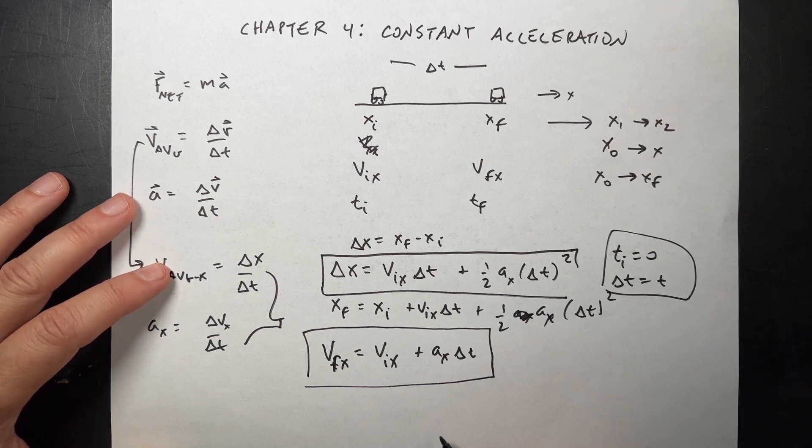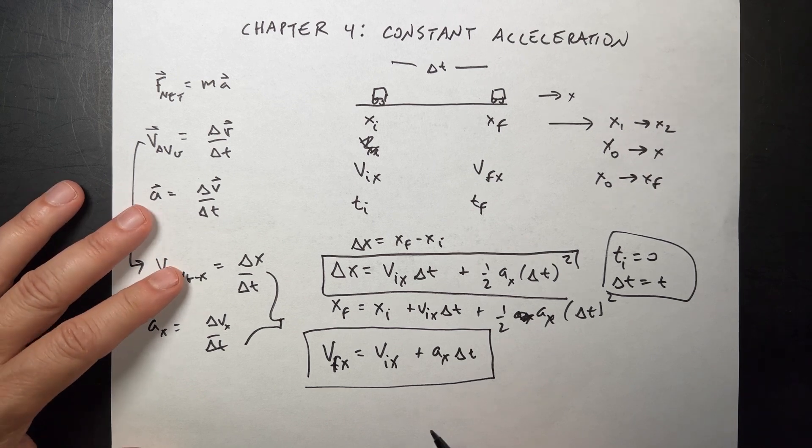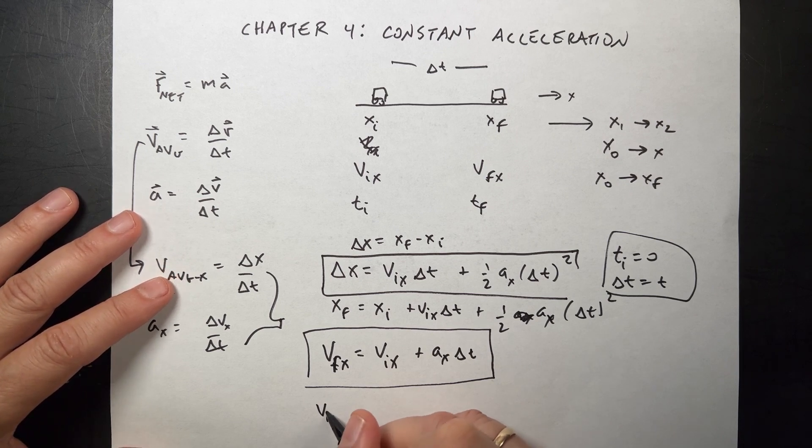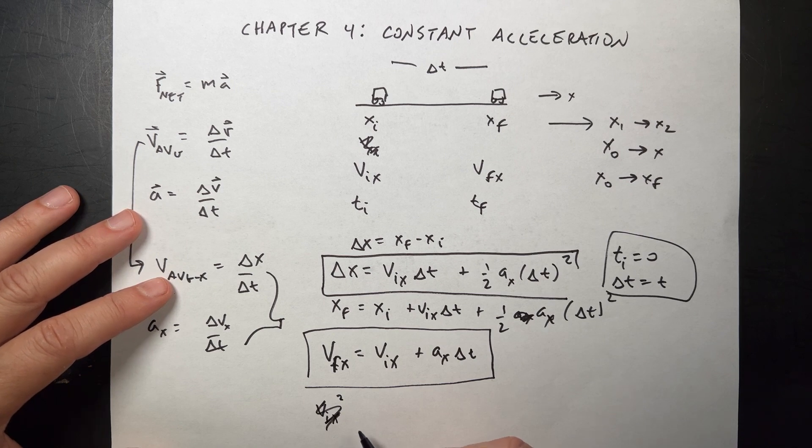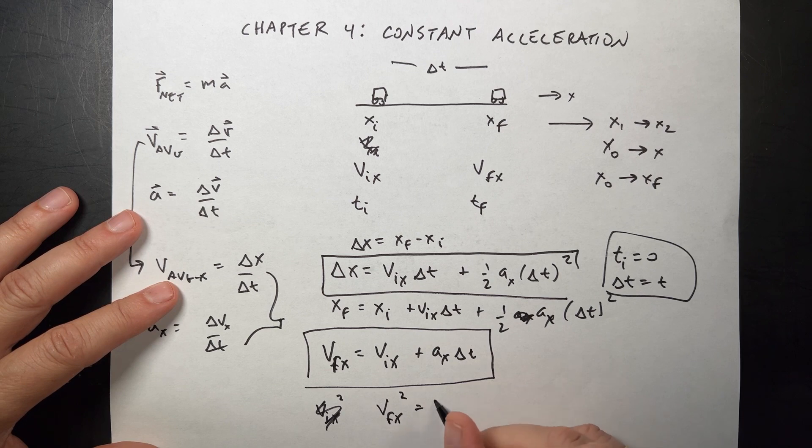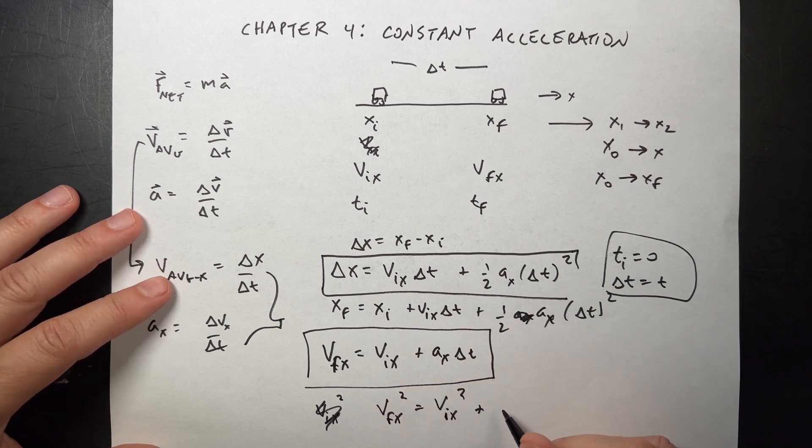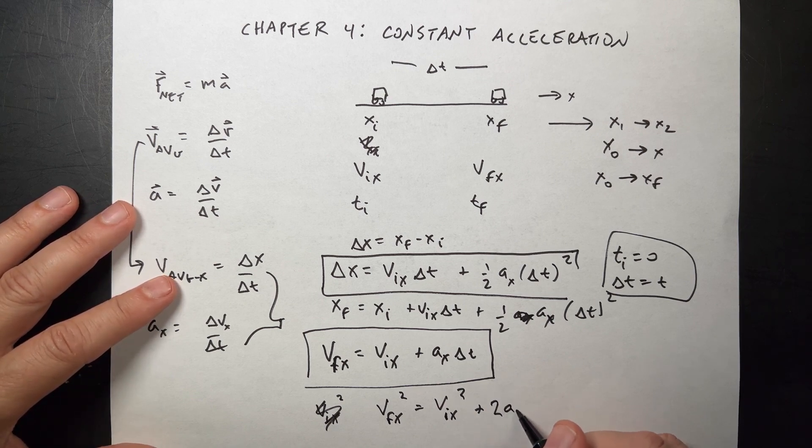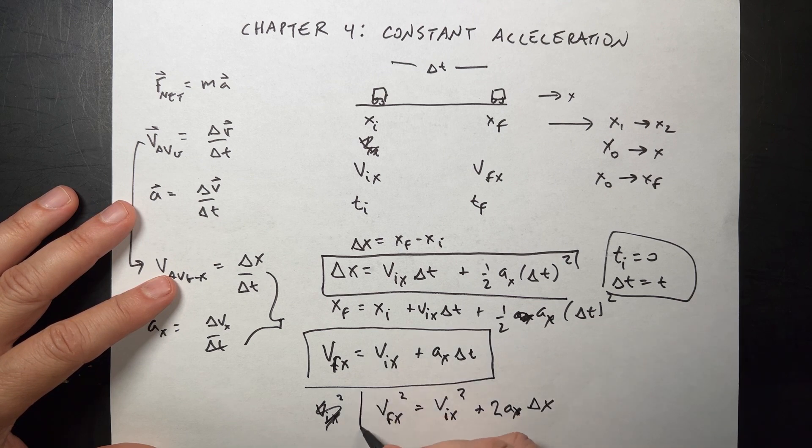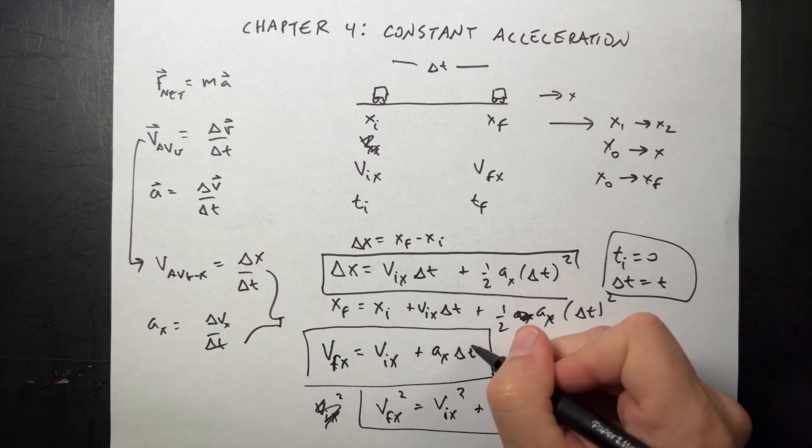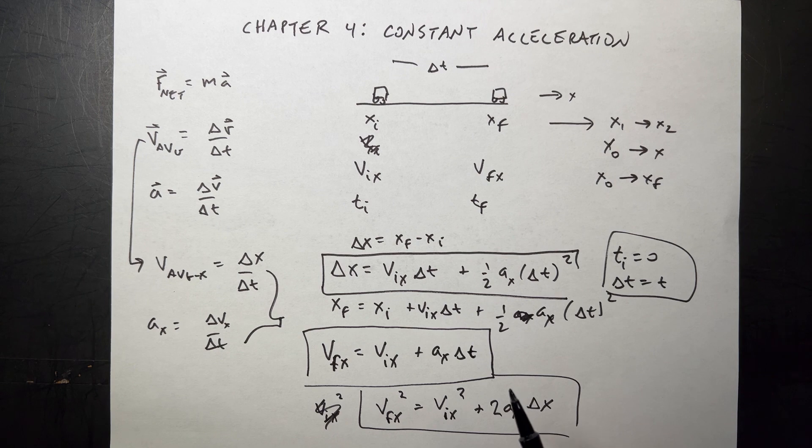The next equation, they have one. Really, there's just the three most important ones. And this is the next one. V final X squared equals V initial X squared plus 2 AX delta X. This one is really nice because it does not have time in it. So, generally for all these problems, what you want to do is say, what don't I know and pick the equation that doesn't have the thing you don't know. This one doesn't have final velocity. This one doesn't have change in position. And this one doesn't have time. And these are all derivable. It's not even that hard. I have done a video on it.